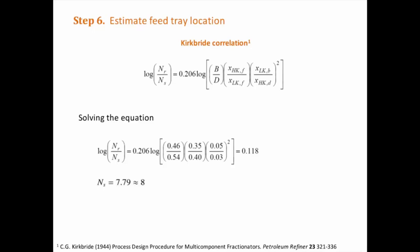And finally, using Kirkbride correlation, the feed tray location can be found. As you can see, this is also a very straightforward calculation, since all the parameters are known.